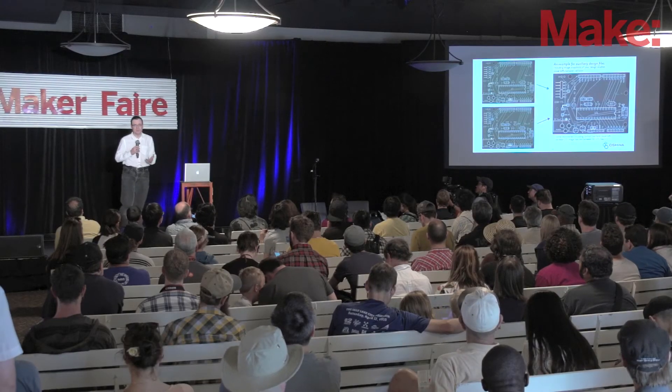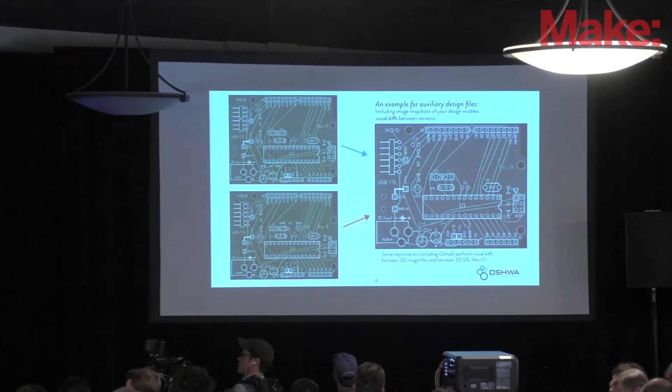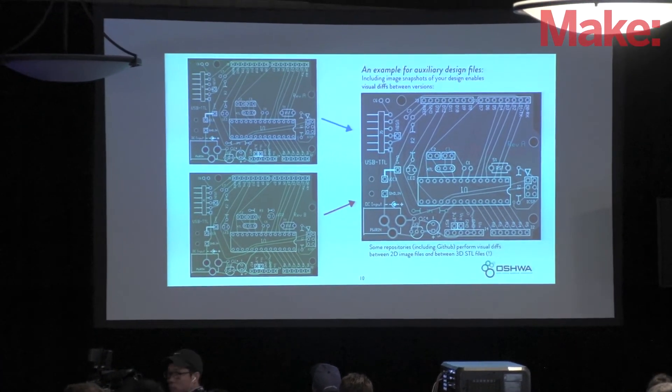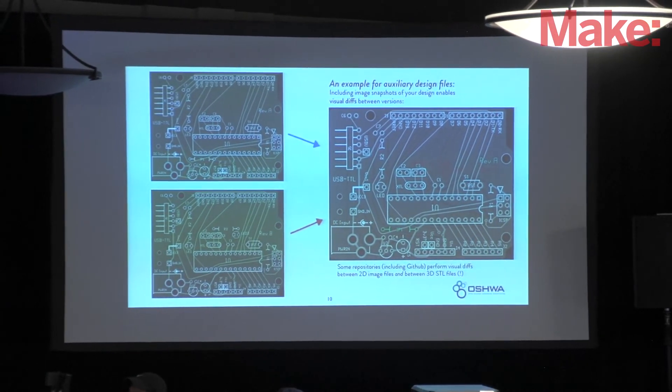The best practice here is to use free and open source design tools when possible, and to use easily obtained off-the-shelf components and standard materials. These are not required but they're very helpful. One nice thing you can do is include JPEG outputs of your files, because then people can put them into GitHub and do a visual diff on them — you can do visual diffs in 2D and 3D now, comparing two CAD files directly to see their differences.